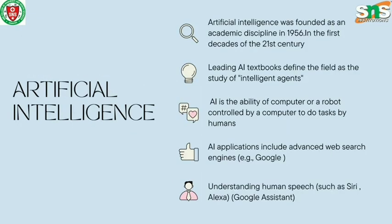Artificial intelligence was founded as an academic discipline in 1956. In the first decades of the 21st century, leading AI textbooks define the field as the study of intelligent agents. AI is the ability of a computer or robot controlled by a computer to do tasks typically done by humans. AI applications include advanced web search engines such as Google, understanding human speech such as Siri, Alexa, and Google Assistant.